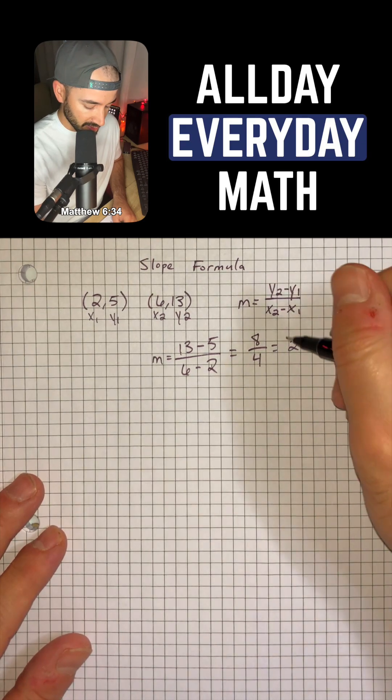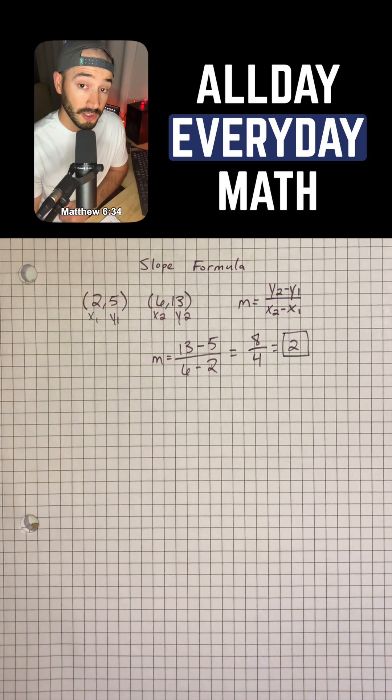So that means that our slope would be 2, and that is all you have to do.